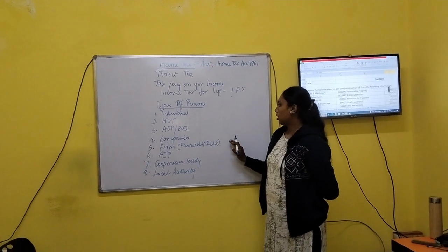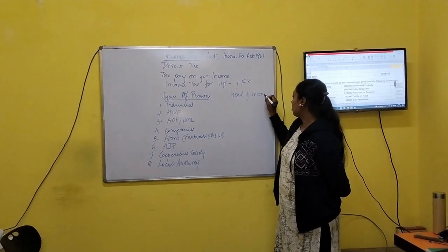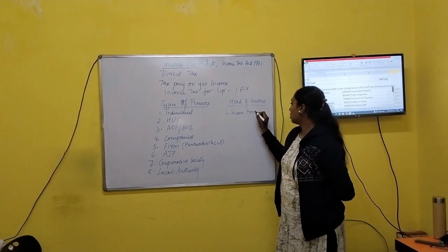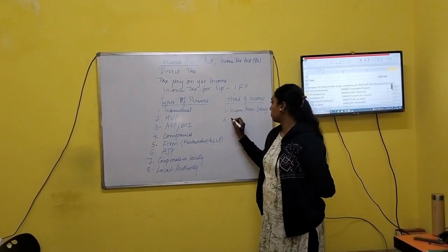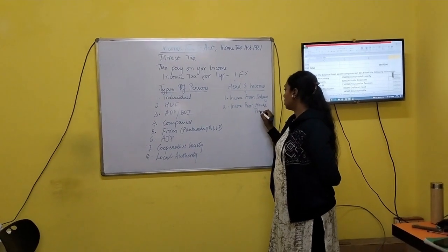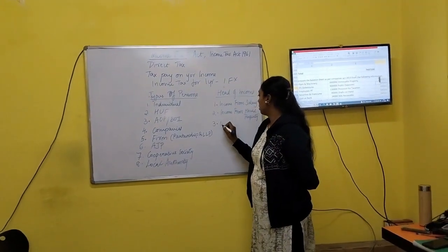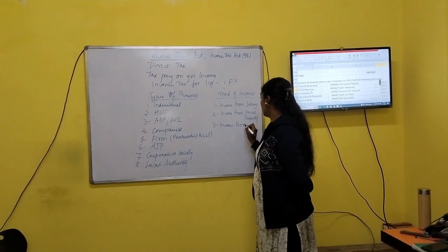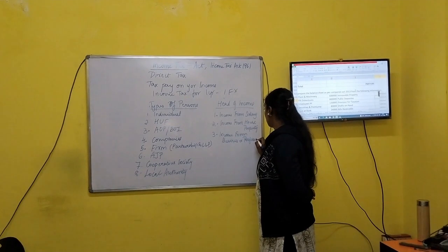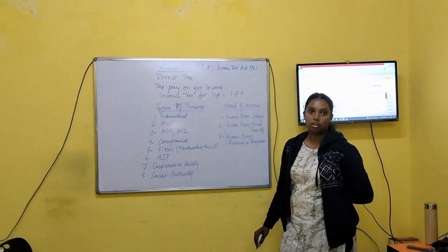In income tax we have different heads of income. There are five heads. First one: income from salary. Second one: income from house property, means rental income. Then third one: income from business or professions, means any business you are doing or you are carrying on any professions like lawyers, doctors, for them it is profession.